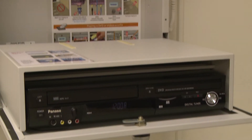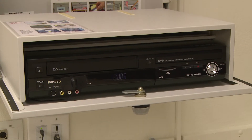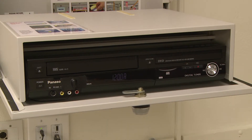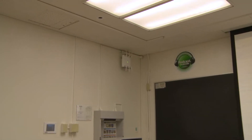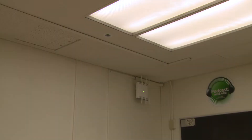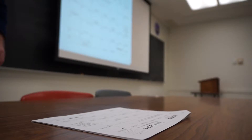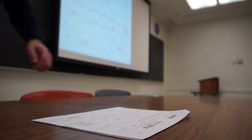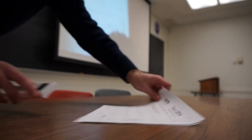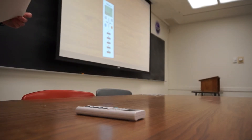The DVD and VCR players are found inside the media station. The document camera is located in the ceiling near the front of the room. For best use of the document camera, position the table beneath the document camera and place your items on the table.